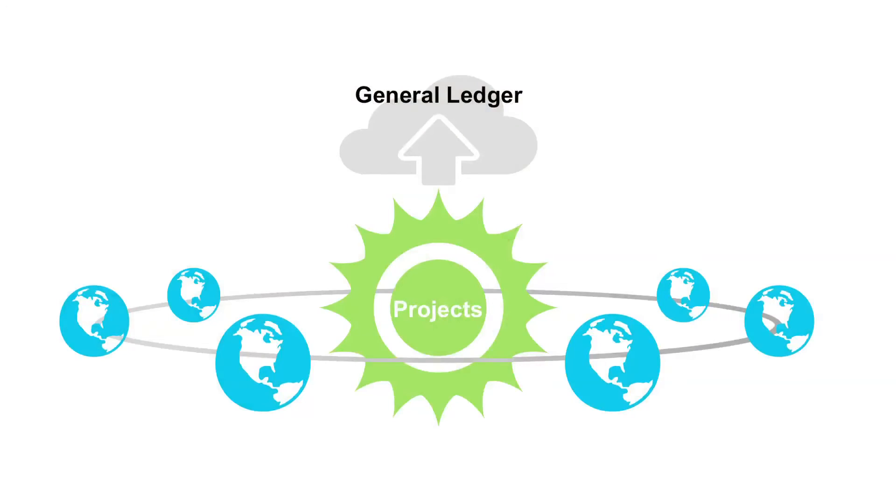The Projects module, a part of the new system, is an easier and more flexible way to record financial transactions before they hit the general ledger. Using the Projects module creates a subledger in addition to the general ledger. Projects' transactions will flow into the general ledger, which will improve managing and reporting on our finances.